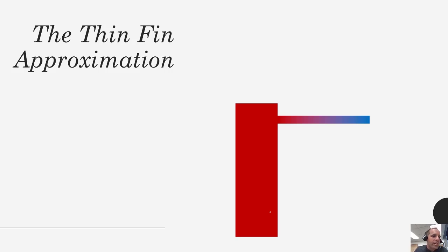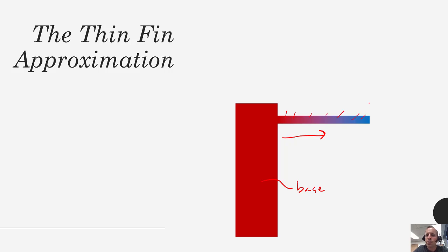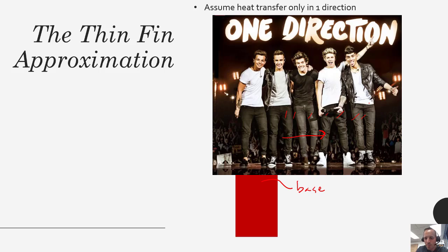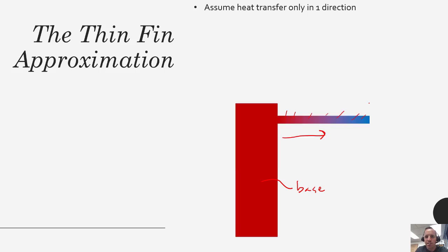When we solve these problems one key approximation that we're going to make is called the thin fin approximation. If we have our base and assume it's dissipating heat — hot, indicated by red — we're losing energy as we go outward and it's convecting all the way along so it's naturally going to cool. One assumption that we'll make is that heat transfer only occurs in one direction.